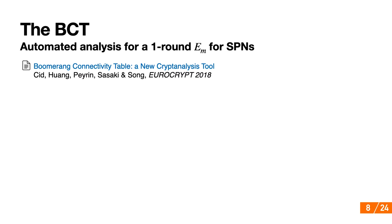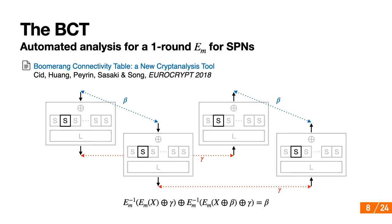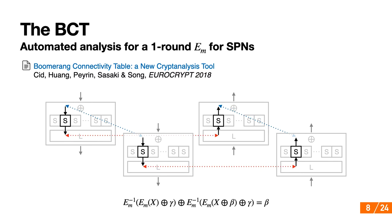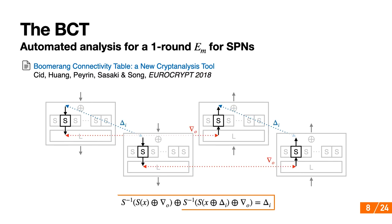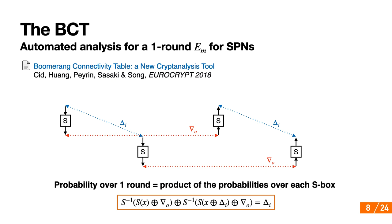What's interesting about this technique is that it reduces the problem of computing the probability R of the boomerang switch over one round function to computing it over one S-box only. We want the returning difference to be equal to beta. If we expand EM and write it as an SPN, looking at the S-box level, from beta and gamma it's easy to deduce intermediate input-output differences delta_i and lambda_o for each S-box. Instead of looking at the property of a round as a whole, the problem is reduced to examining each S-box independently. Since the S-boxes are applied in parallel, the probability over one round is the product of the probabilities over each S-box.